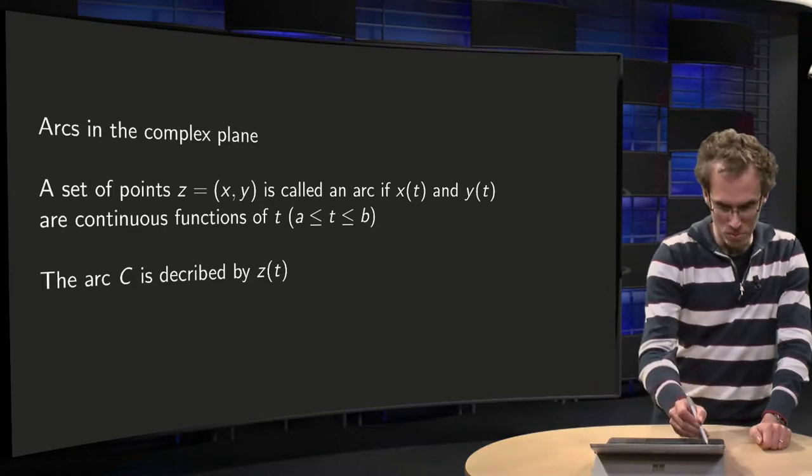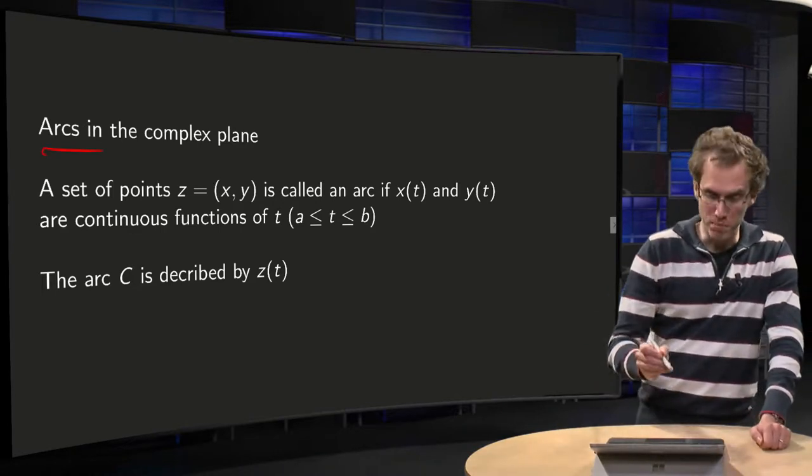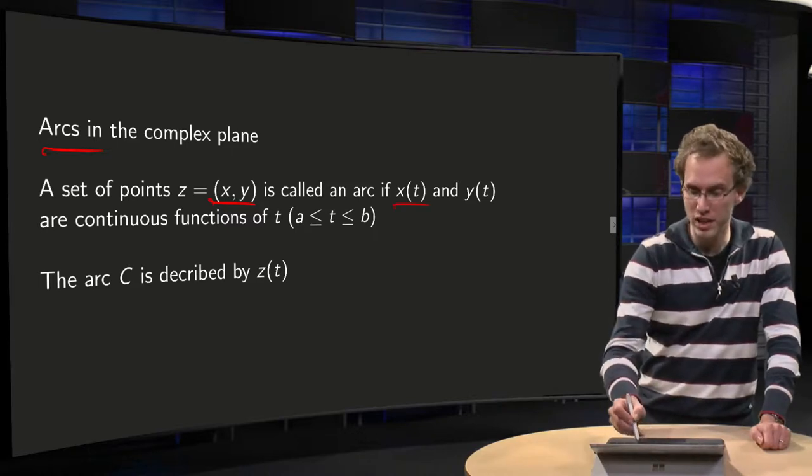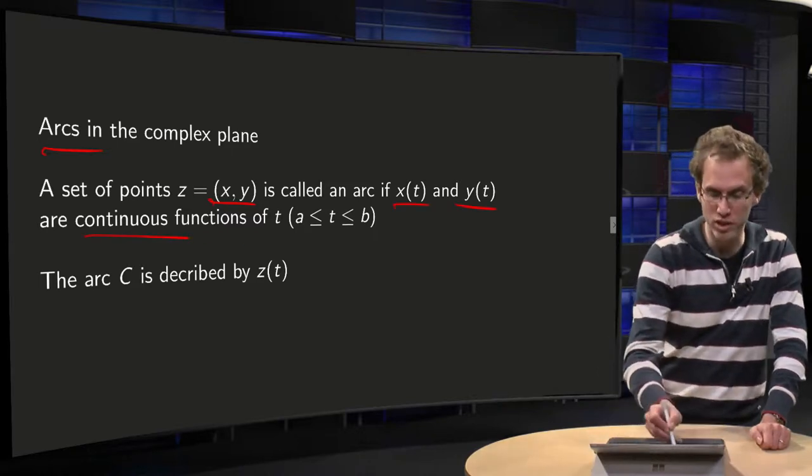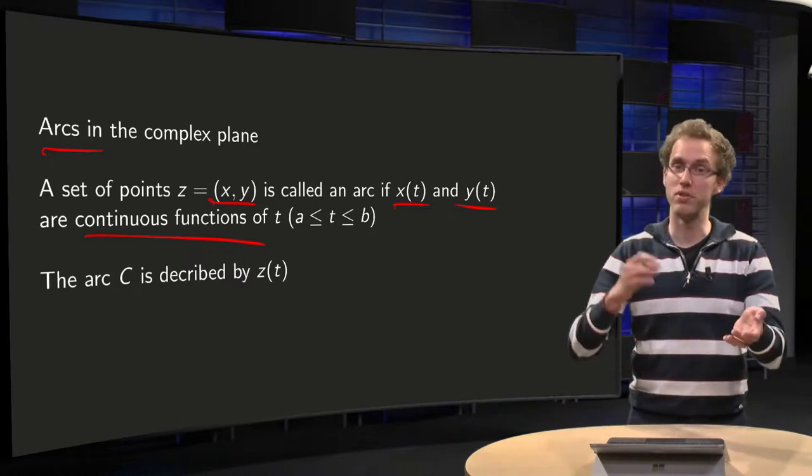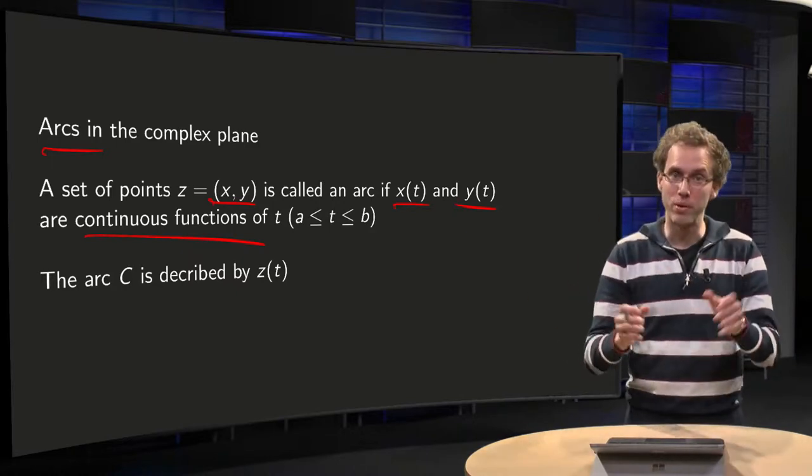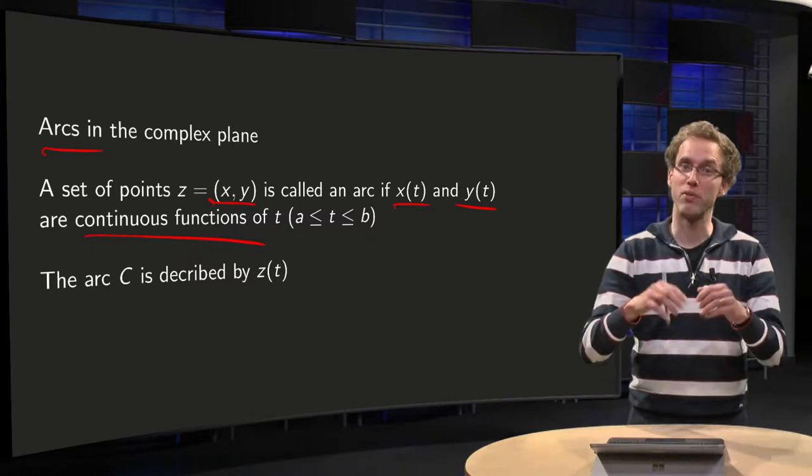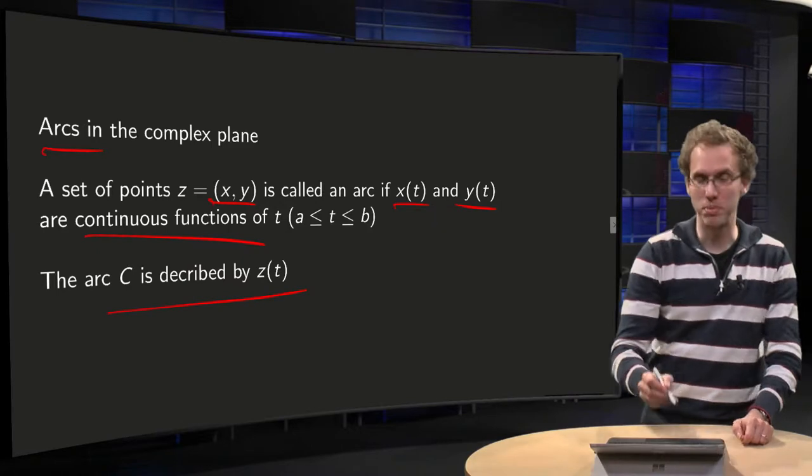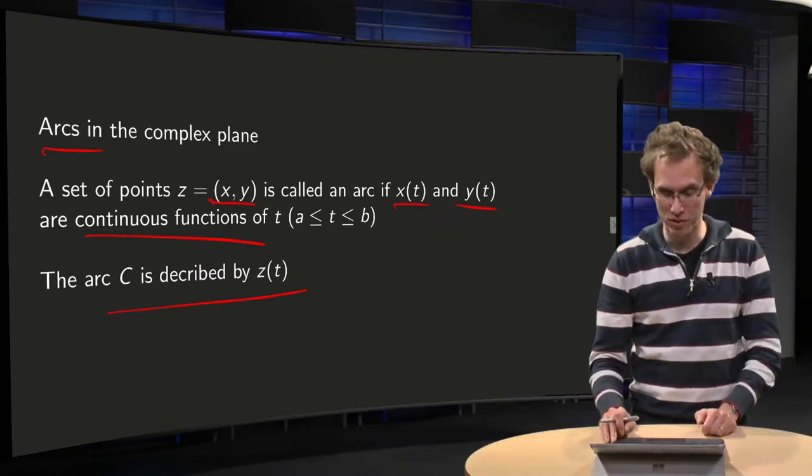Let's talk about arcs in the complex plane. A set of points z equals (x, y) is called an arc if the functions x(t) and y(t) are continuous functions of t, where t is a real parameter varying between a and b. So we want continuous functions, so an arc without sudden jumps. The arc C is described by z as a function of t.